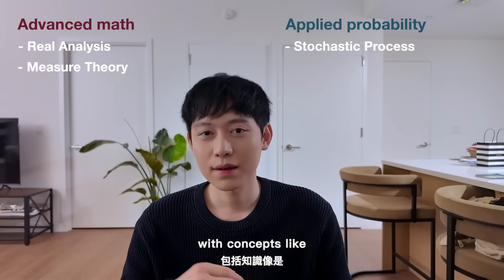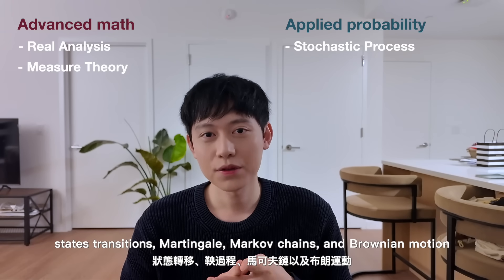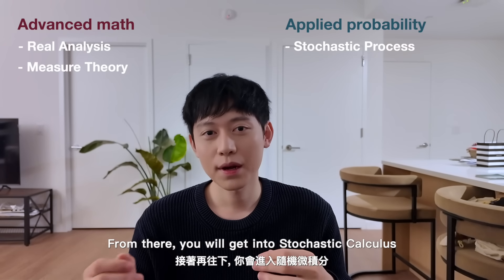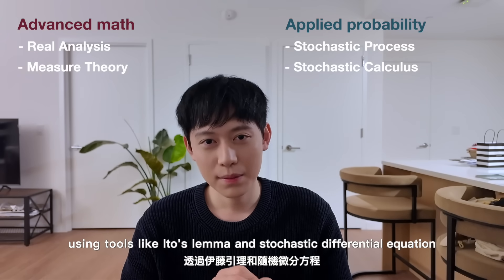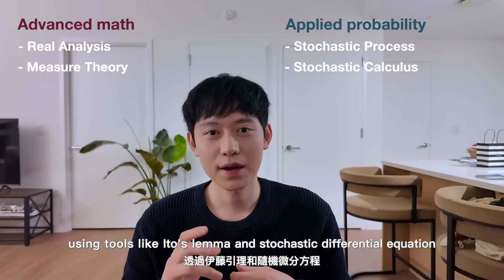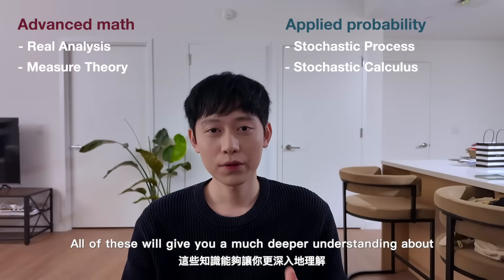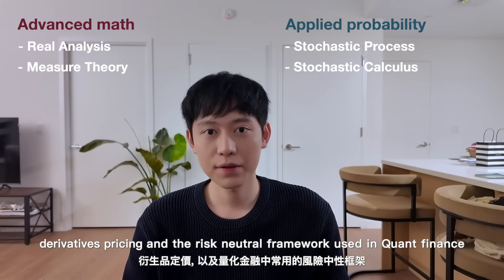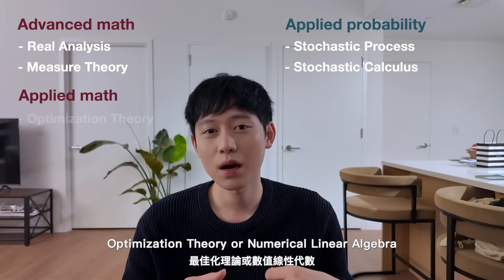After that you can start learning applied probability topics like stochastic processes — how to model randomness that evolves over time, with concepts like state transitions, martingales, Markov chains, and Brownian motion. From there you'll get into stochastic calculus, using tools like Itô's lemma and stochastic differential equations to analyze these dynamics, which gives you a much deeper understanding of derivatives pricing and the risk-neutral framework.